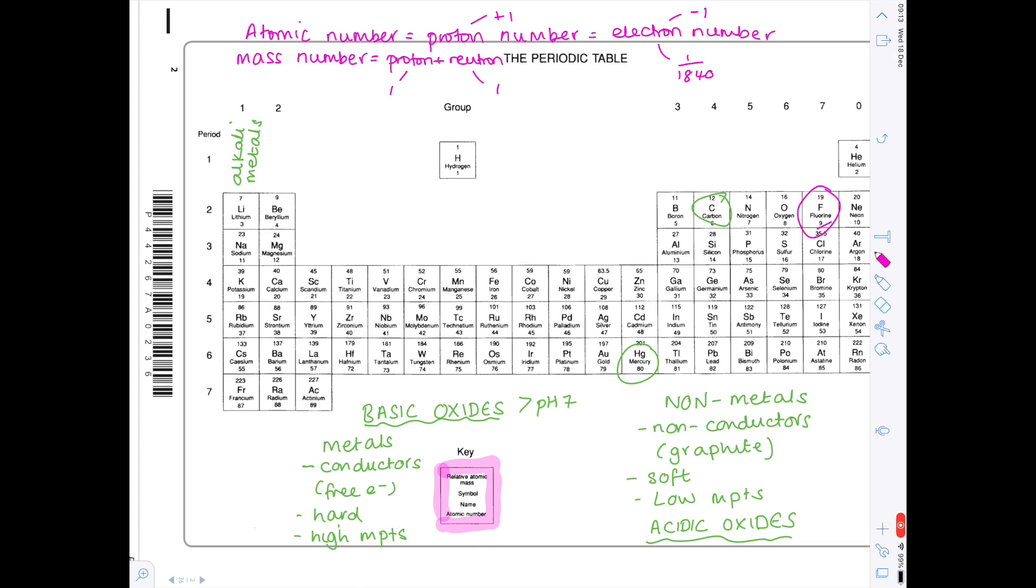Let's now look at electronic configurations. Taking the element beryllium, remember only two electrons can go into the first shell and then after that it's eight electrons. We know that its electron number is 4, so therefore its electronic configuration is 2, 2.